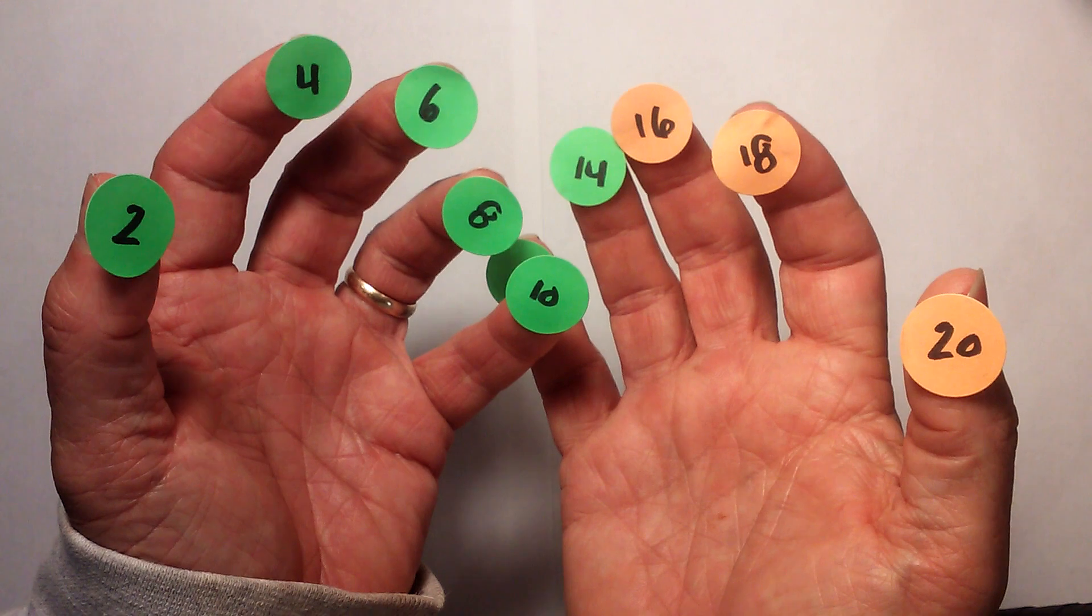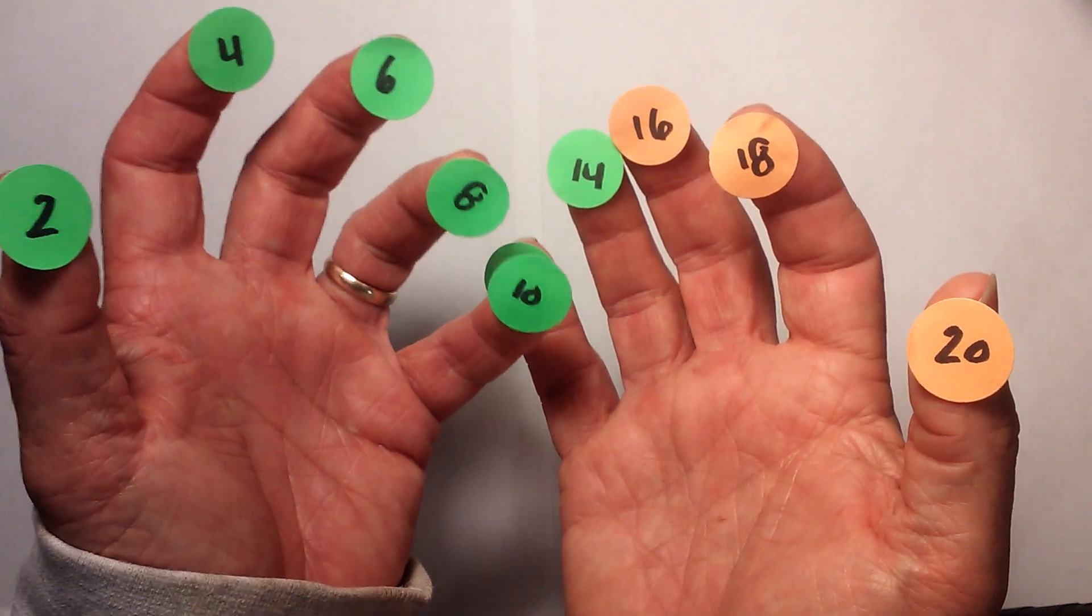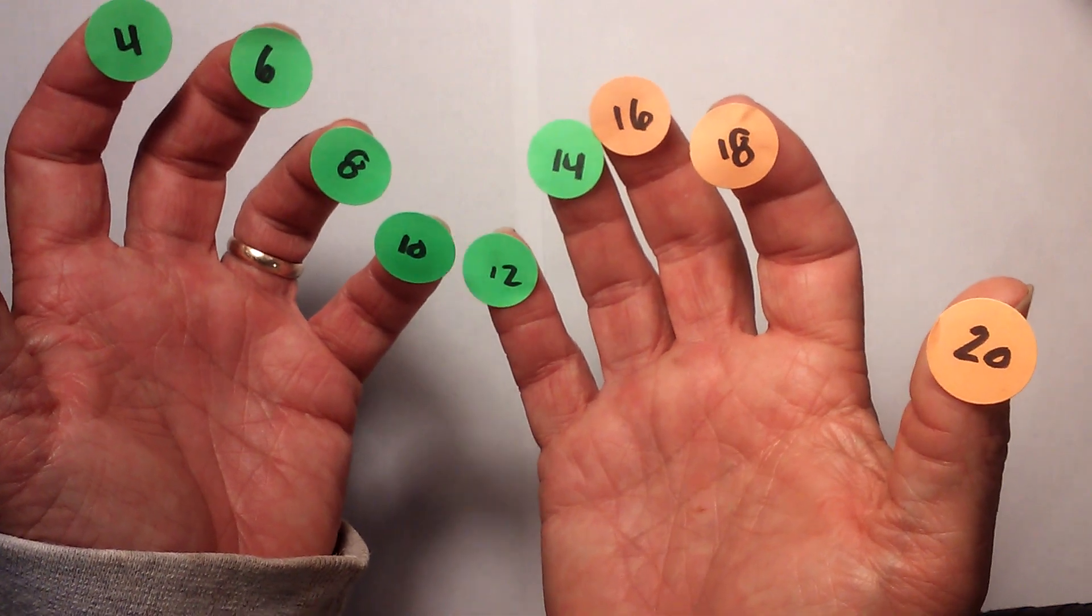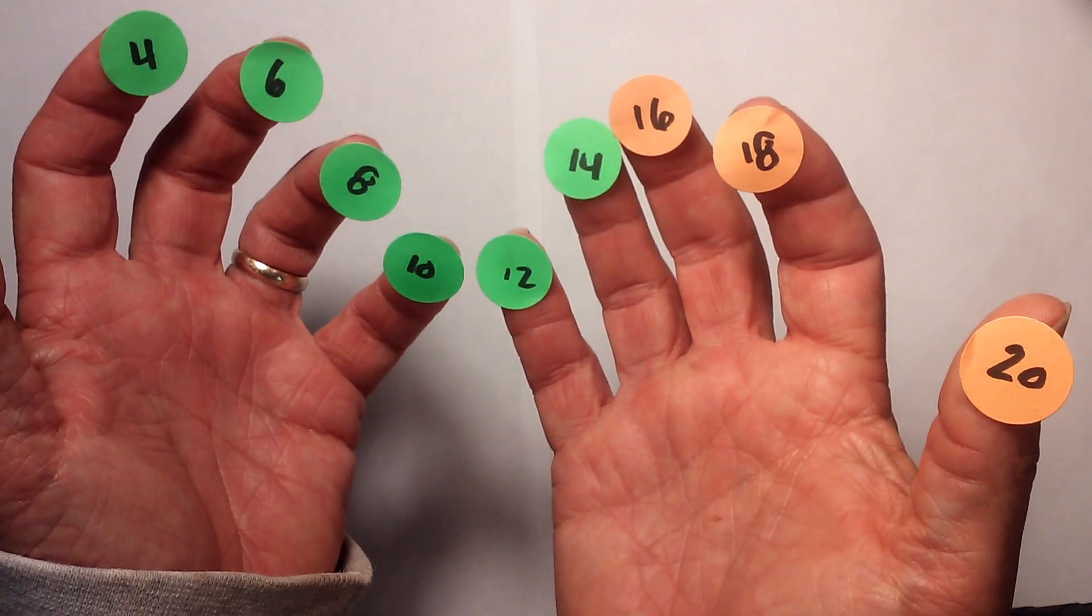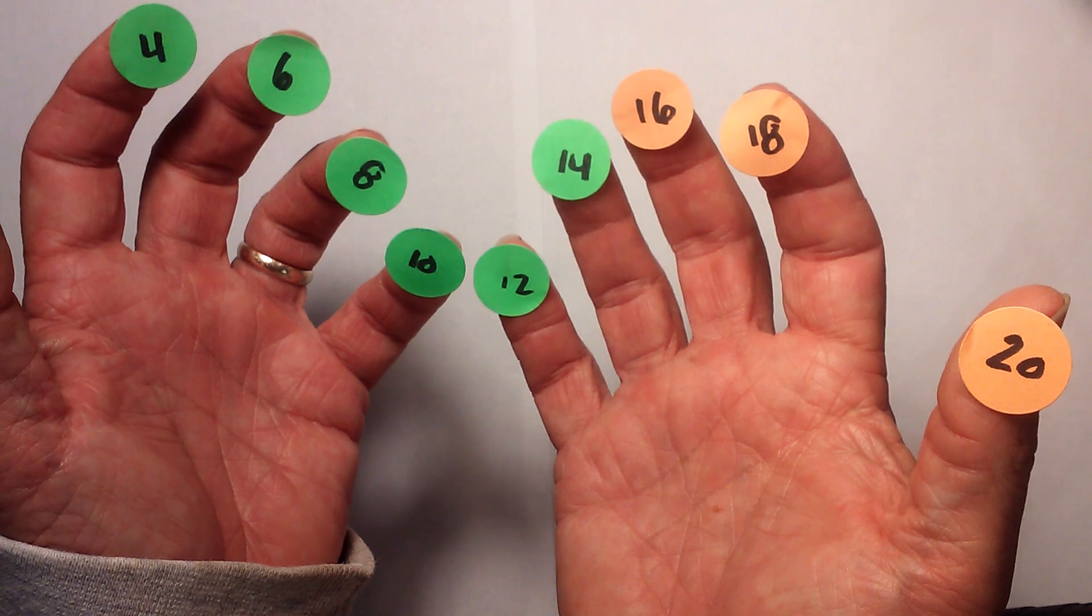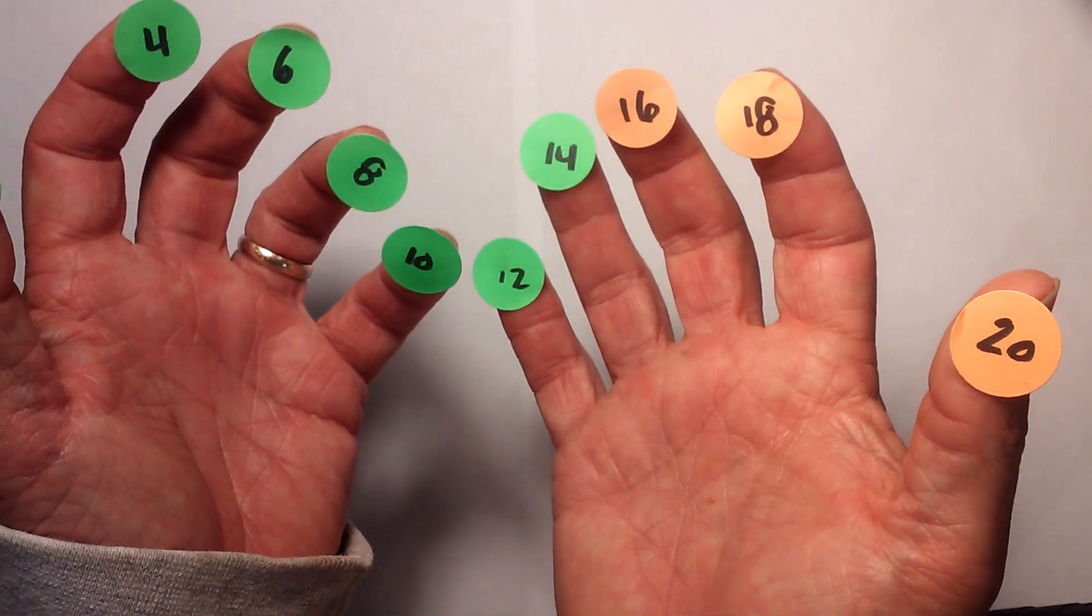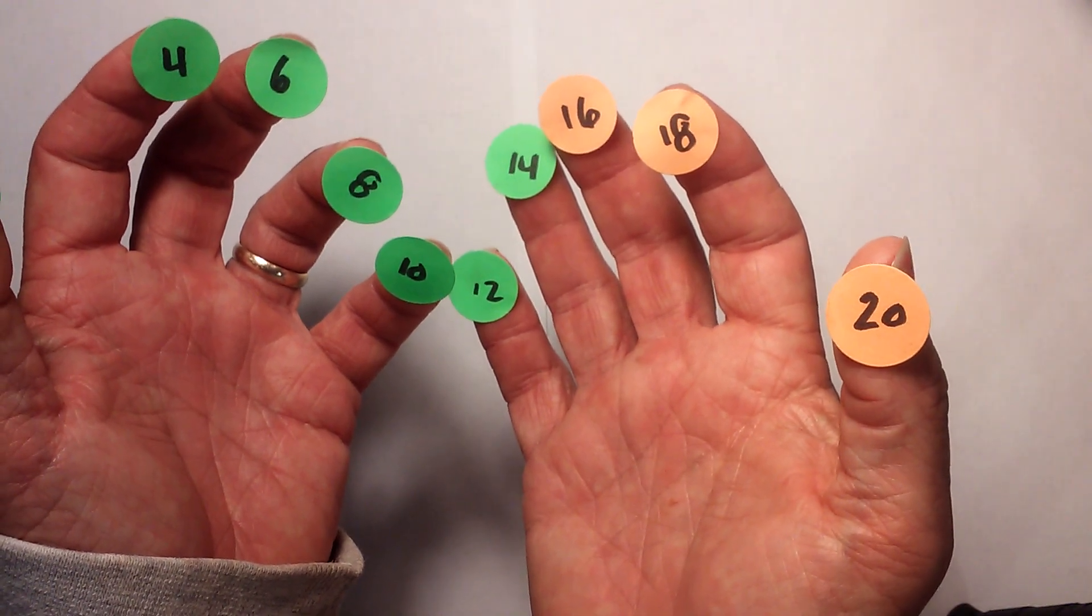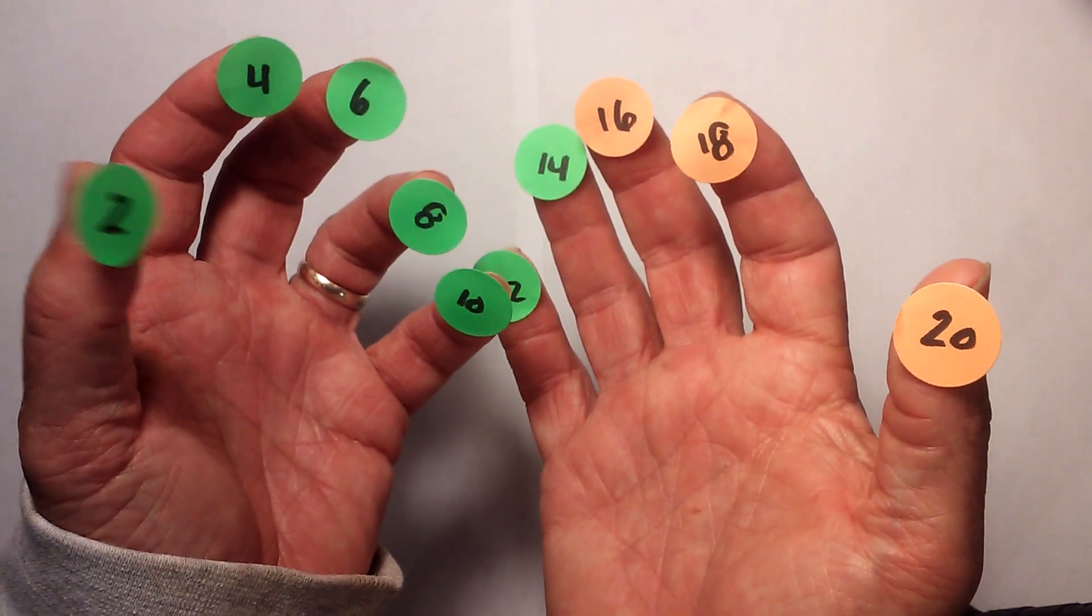And then you just repeat that pattern and add a 1, so you have 2, which is 12, 4 is 14, 6 is 16, 8 is 18, and then you have 20.